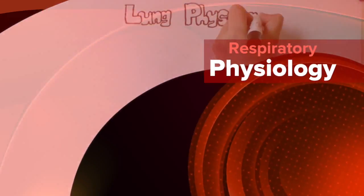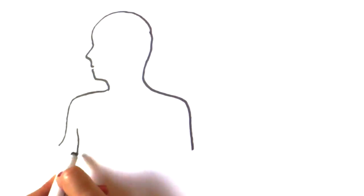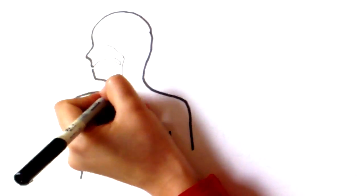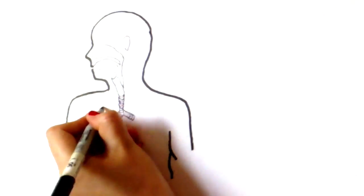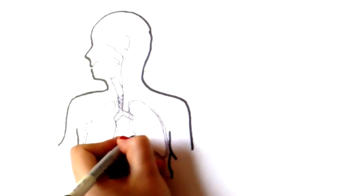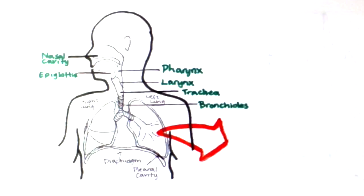We're going to be talking about respiratory physiology. Gas exchange occurs at the lungs. Air enters the respiratory tract through the nose into the nasal cavity or oral cavity, down the pharynx, into the larynx and trachea.